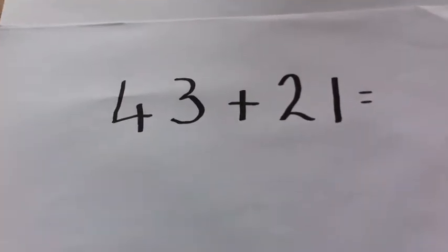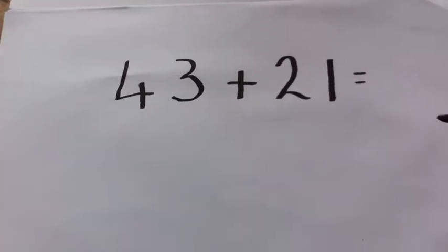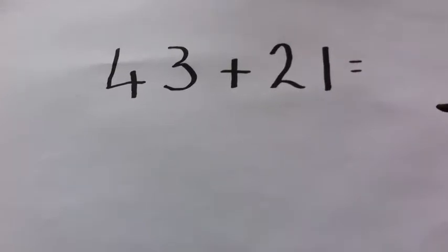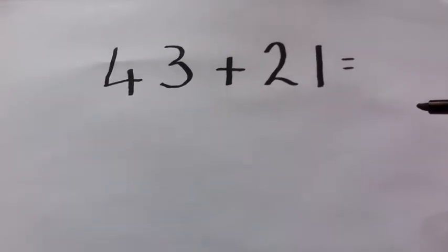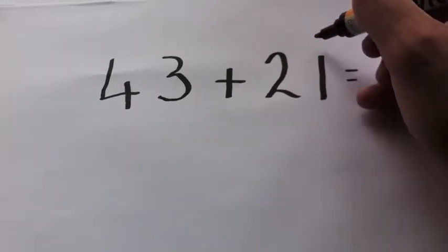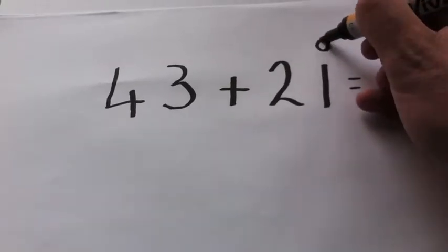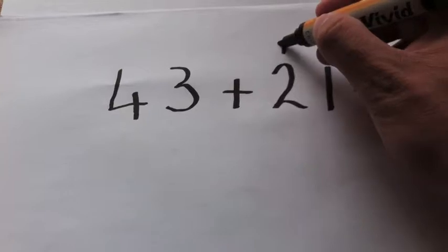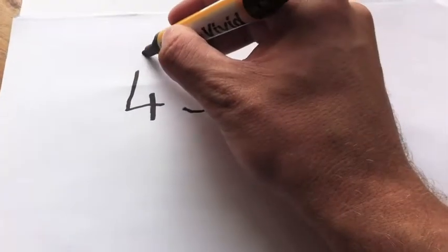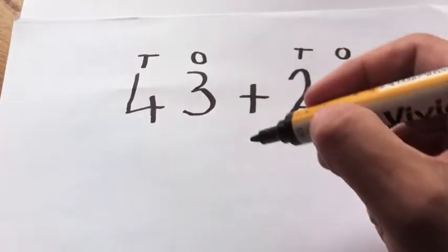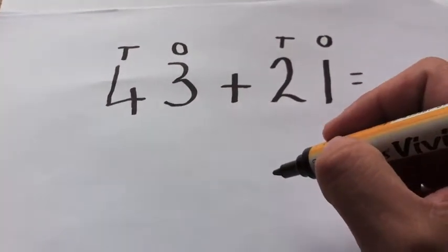Easiest way to do that is to just use your place value columns, so your ones column, your tens column, your ones column, your tens column, and split it up like that.